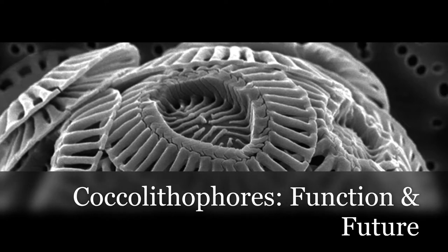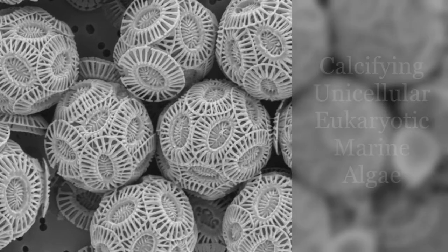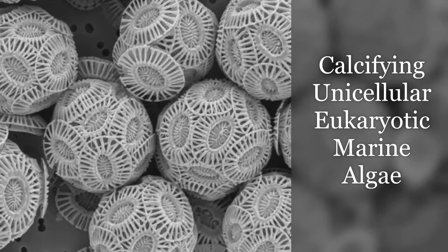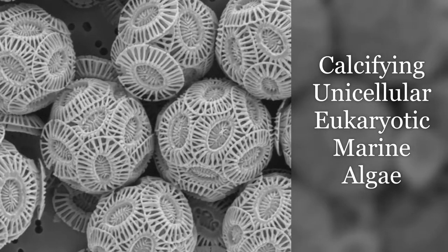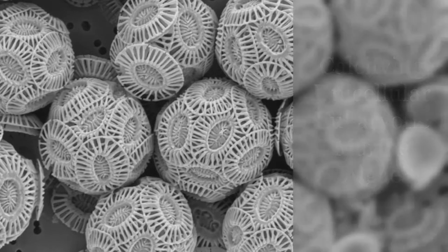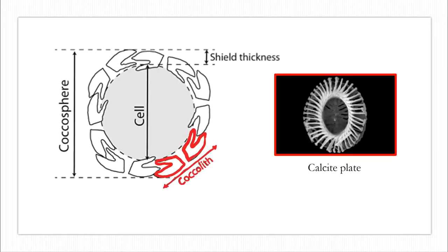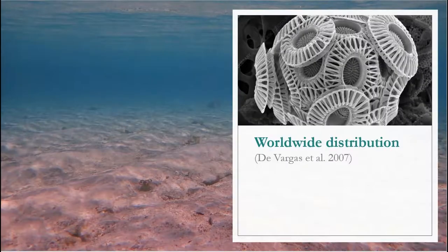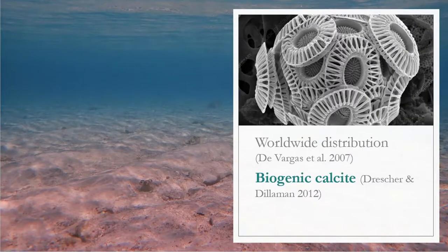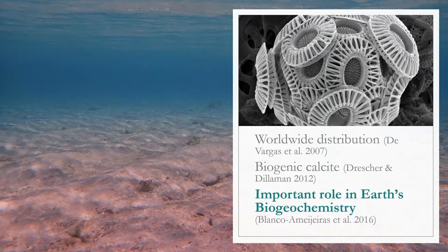Coccolithophores are calcifying, unicellular, eukaryotic marine algae that produce a cell covering of calcite plates, known as coccoliths, that collectively create a coccosphere. These calcifying phytoplankton have a worldwide distribution and are one of the most significant producers of biogenic calcite, said to play an important role in Earth's biogeochemistry.